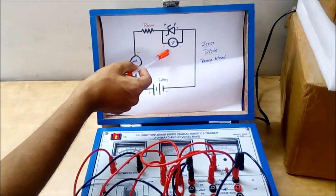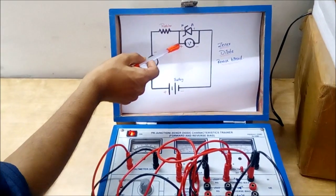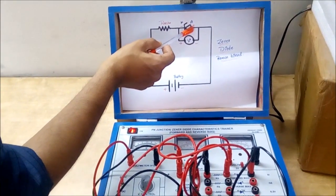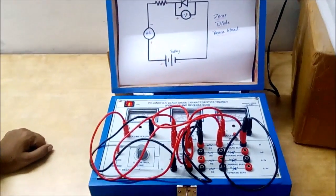We are connecting the voltmeter, that is the cathode with the positive terminal of the voltmeter and positive terminal of the diode along with the negative terminal of the voltmeter. That's the end of the connection.